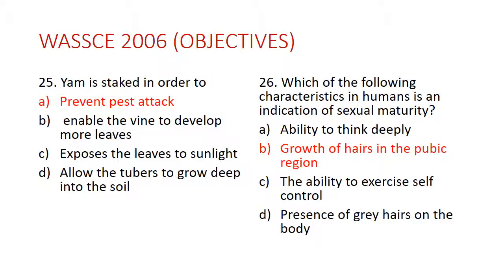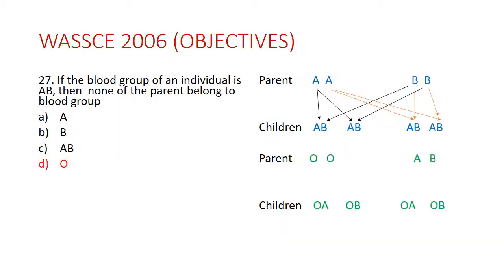Question 26: Which of the following characteristics in humans is an indication of sexual maturity? The answer is the growth of hairs in the pubic region.